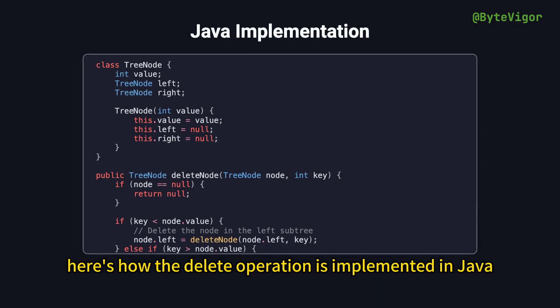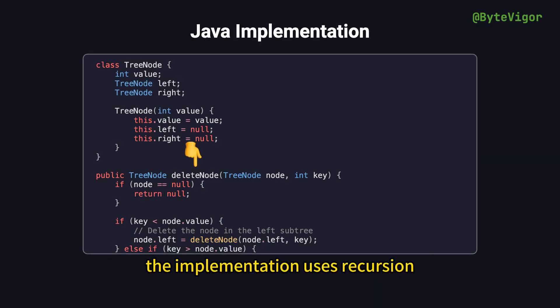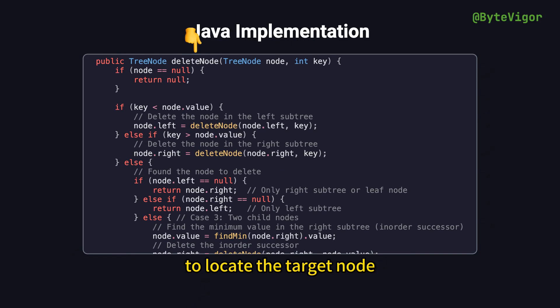Here's how the delete operation is implemented in Java. The implementation uses recursion to locate the target node. The code compares the target value with the current node's value. If the target value is smaller, it moves to the left subtree. If it's larger, it moves to the right subtree. When the target node is found, the deletion logic is applied.